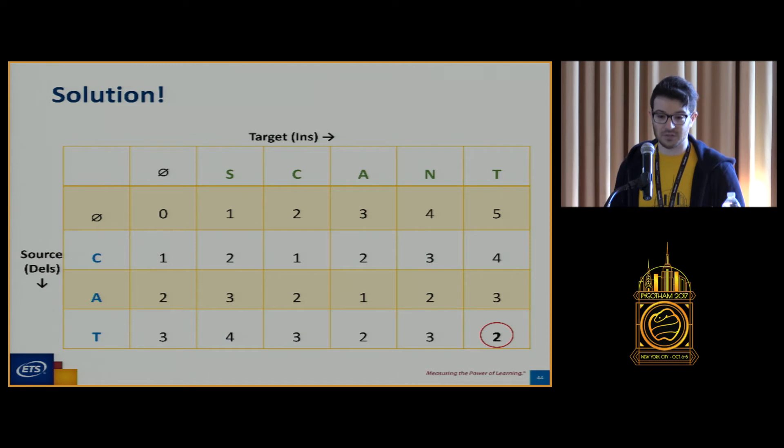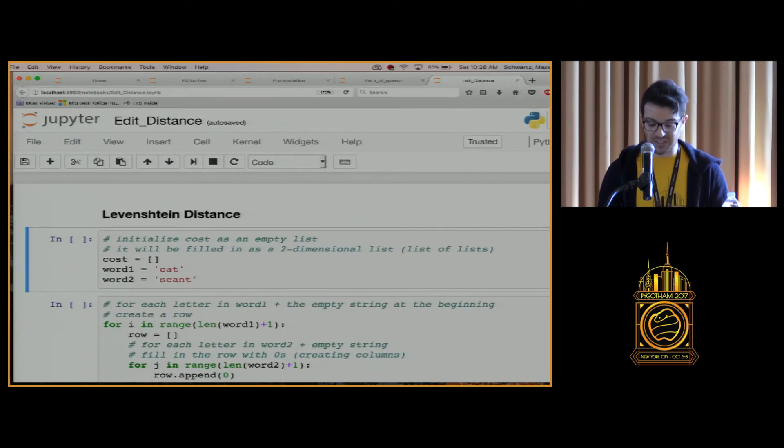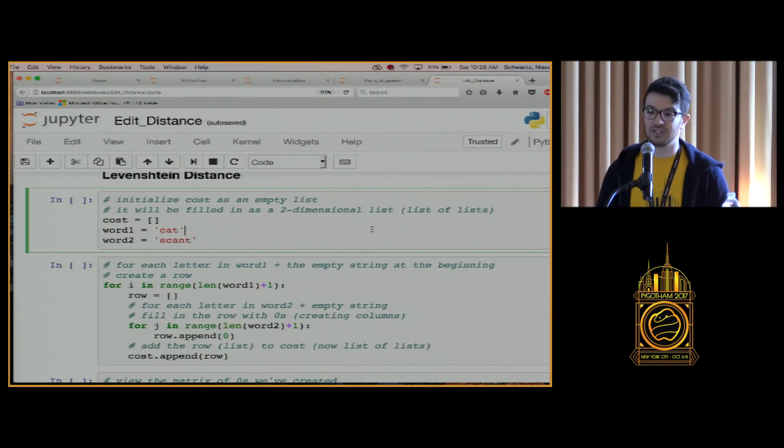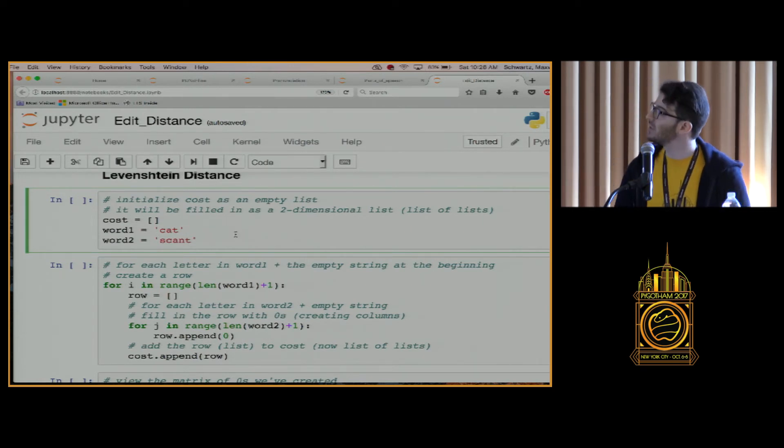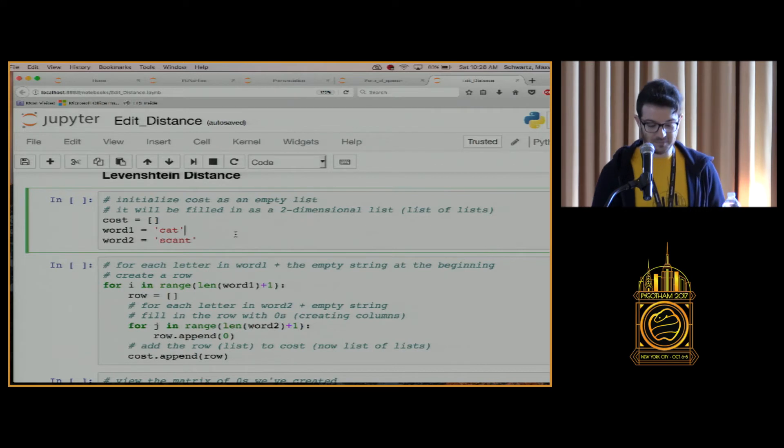So, this is the algorithm. This algorithm will work in, should work in any programming language that allows for things like a two-dimensional list, right? A matrix. So, most programming languages. So, the important thing here is to understand how the algorithm works. We can actually see its implementation in Python. This is not necessarily the cleanest way to write it, but it's a relatively transparent way to write it, so we're going to break it into steps. First, we'll define our empty list that will be filled in with other lists. This is going to be the matrix eventually. This is our cost. We'll define a first word and a second word. We're going to stick with the same two, cat and scant. Is this large enough for everybody to see in the back-ish? Okay, cool.